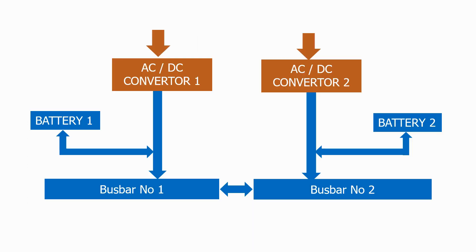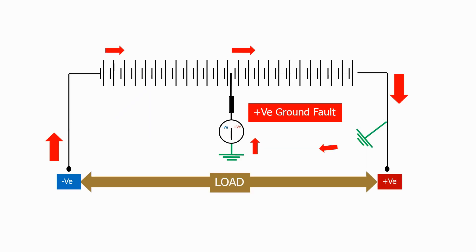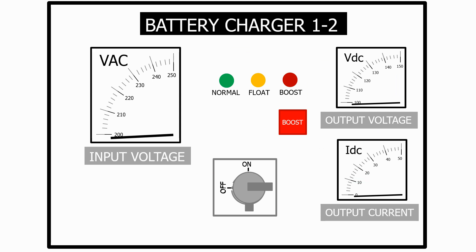DC systems are essential equipment in any transmission substation and make sure that the substation operates correctly when we have a full system shutdown. We look in detail at the architecture of the DC systems and learn how we size a typical substation battery. We then look in detail at how we detect a battery ground fault before looking at how we operate the DC system.